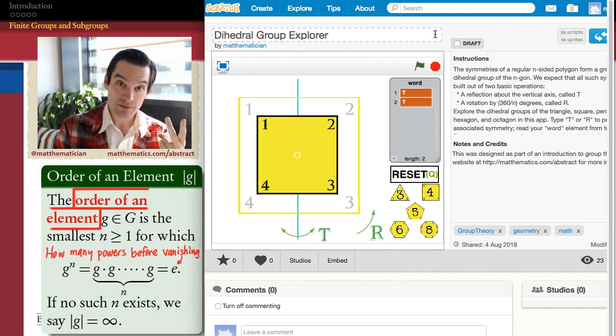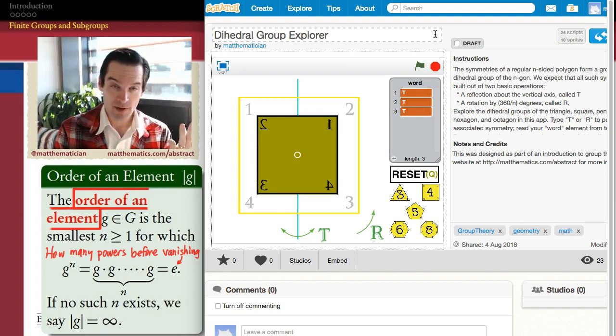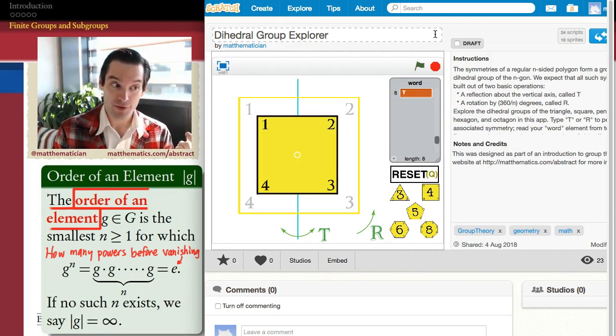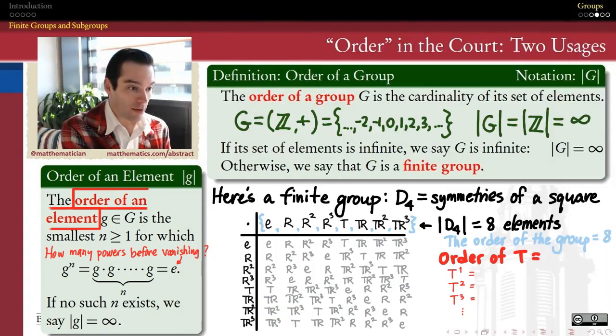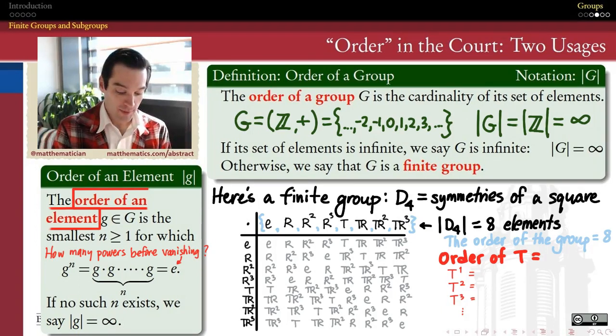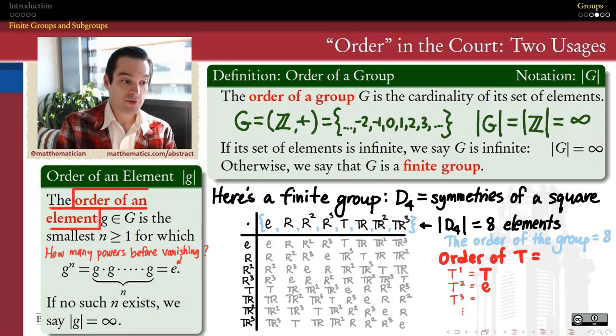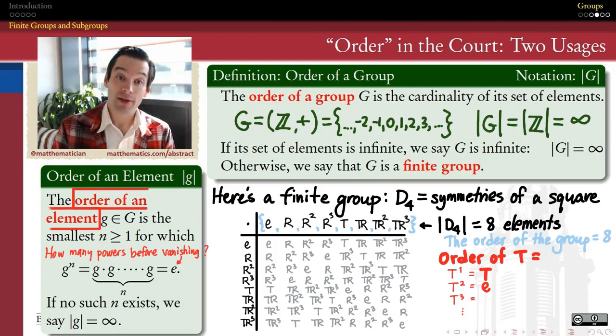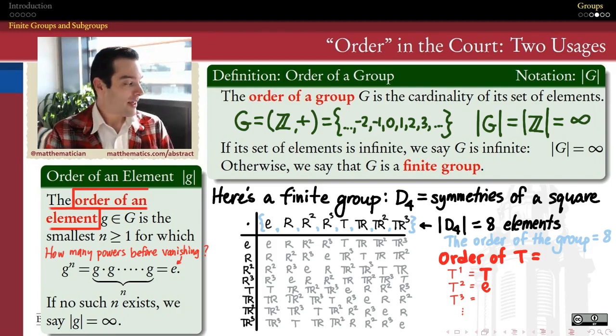Immediately we can see that t to the first power is not the identity. t to the second power is the identity. t to the third power, if I do t again, not the identity. t to the fourth power is the identity again. Not the identity in fifth power, sixth power is. Seventh is not, eighth is, and so forth. So that already gives me the order of this element, the order of the element t. Because the first power is t, but the second power is already the identity again.